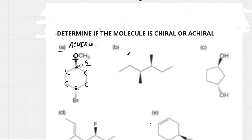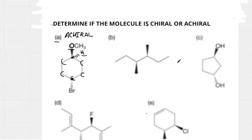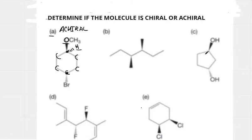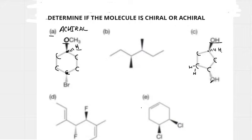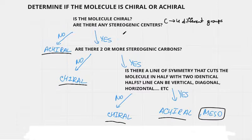Skipping B for now, let's do C first. Again we ask: are there any stereogenic centers? This carbon is connected to an OH, a hydrogen, and two carbons. Going left and right, at first there's no difference — both sides connect to another carbon. But the carbon on the left is connected to two hydrogens only, while the carbon on the right is connected to an OH group. There is a difference, therefore this carbon is a stereogenic carbon.